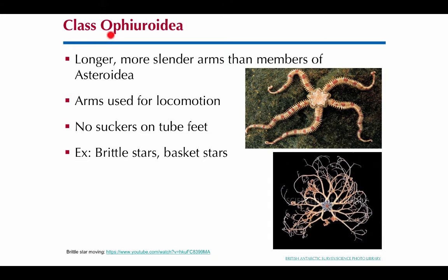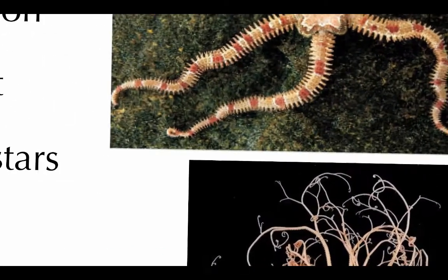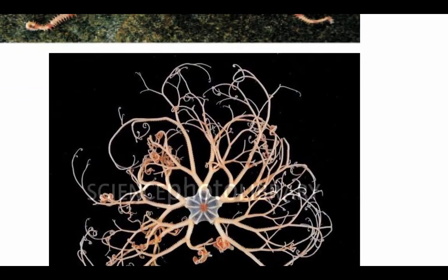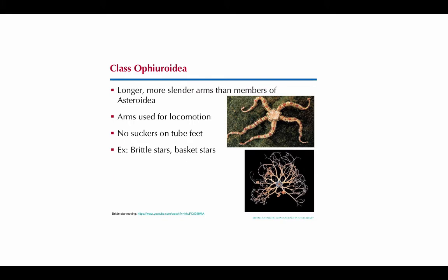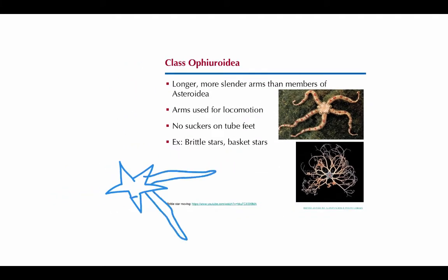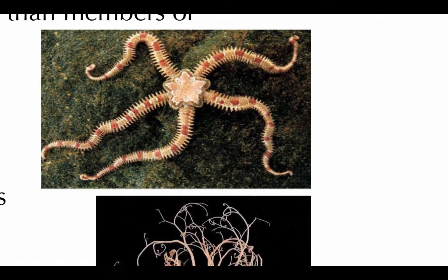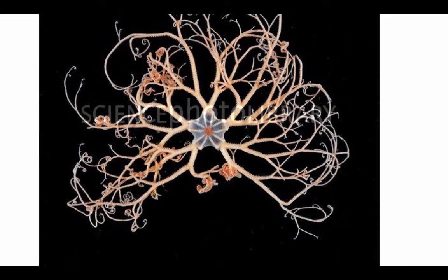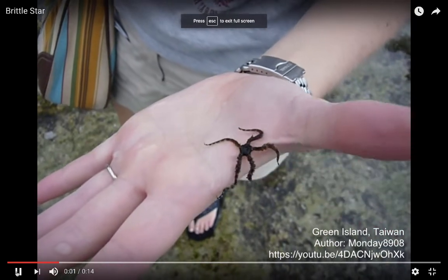The class Ophiuroidea — ophis means snake-like — these are the brittle stars. You can see that the central disk here is actually quite distinguishable from the arms, unlike the Asteroidea. The arms are also much skinnier and they help the animal move. They don't have suckers on the tube feet, but they do have tube feet like other echinoderms. And here's a basket star — those arms are actually branched and joined together — quite a beautiful organism.